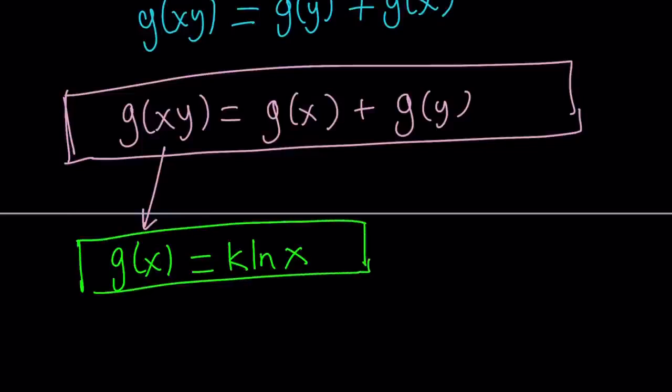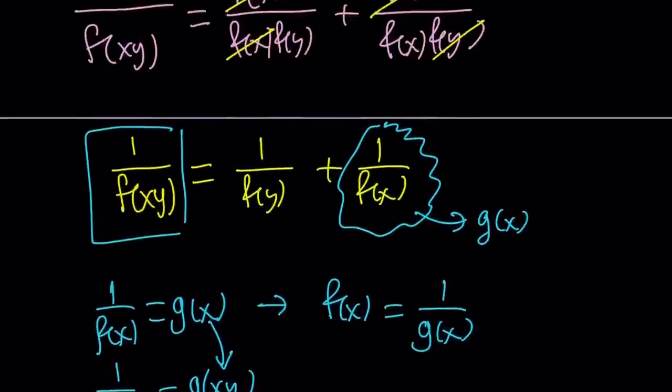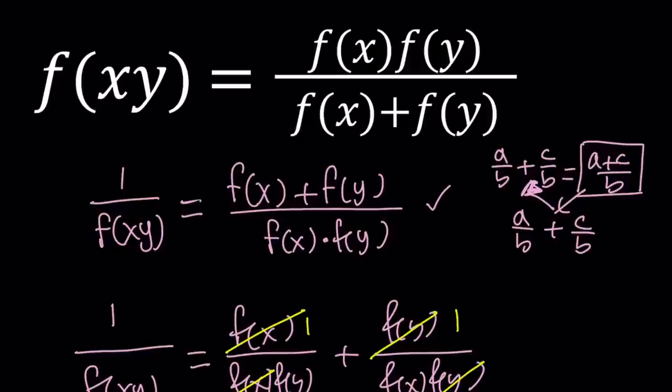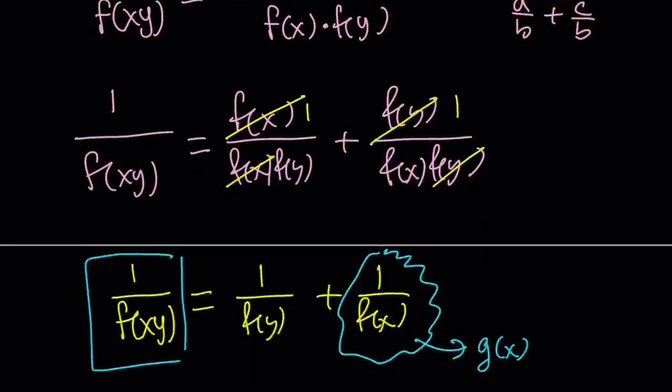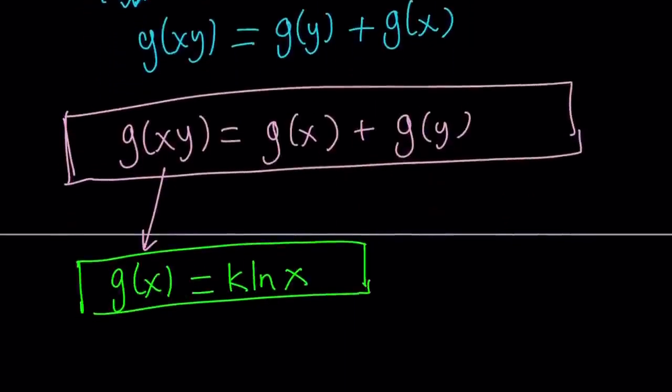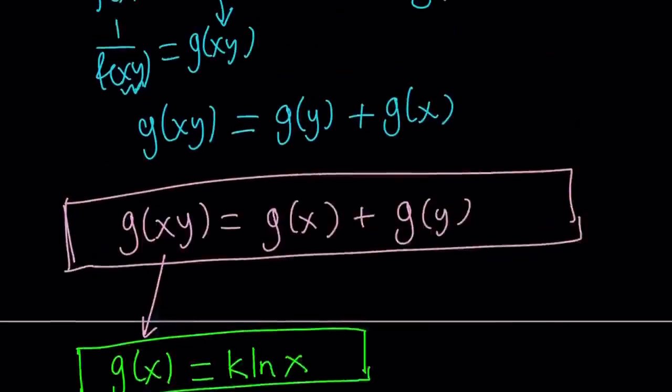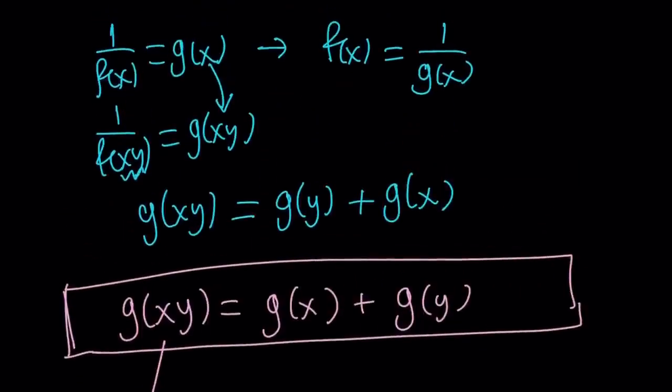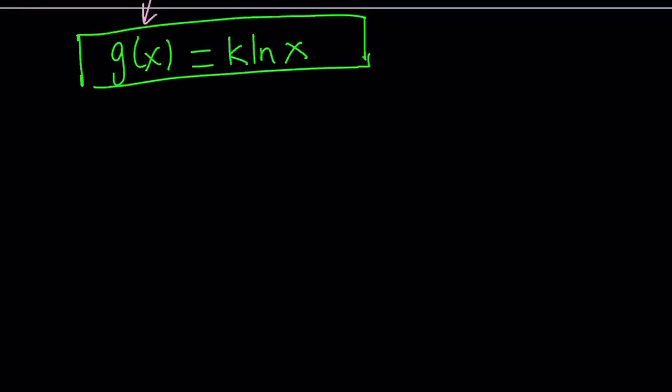So g of x can be written as k times ln x, but that's not the solution because we're not looking for g of x. What are we looking for? We are looking for f of x because the original problem referred to f of x as a function, right? So let's go ahead and find the solution for f of x.